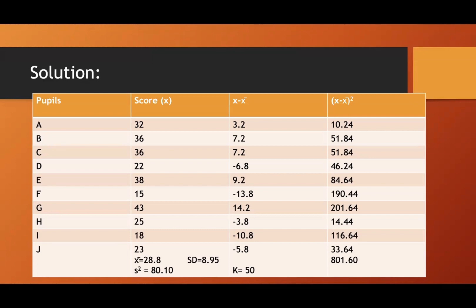So 32, 36, 36, 22, 38, 15, 43, 25, 18, and 23. So by using the formula, you need to find the mean. How to find the mean? You just add this all divided by 10. So add 32, 36, 36, 22, 38 until 23 divided by 10. You have the mean of 28.8.